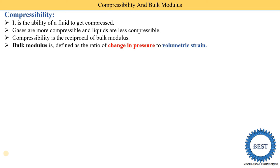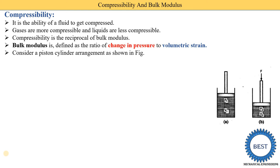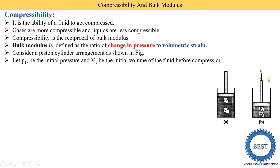This theory can be explained by considering a piston-cylinder arrangement as shown in the figures. In figure A, we see a cylinder with a piston, and some gas is filled inside. The gas has an initial pressure p1 and initial volume v1. This stage is called the fluid before compression.